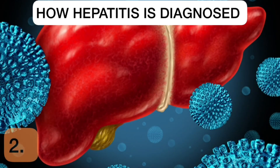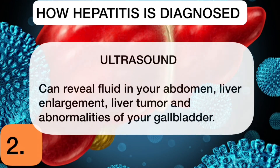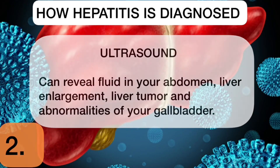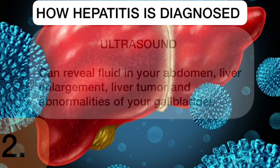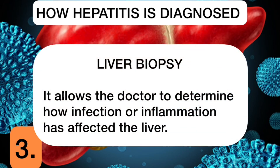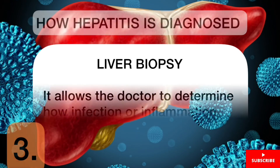Another method of diagnosis is ultrasound. Ultrasound can reveal fluids in your abdomen, liver enlargement, liver tumor, and abnormalities of the gallbladder. Thirdly, we have liver biopsy, which allows the doctor to determine how infection or inflammation has affected the liver.